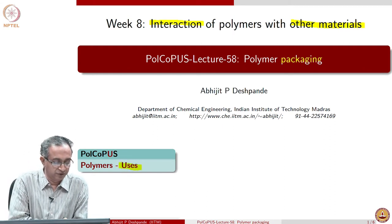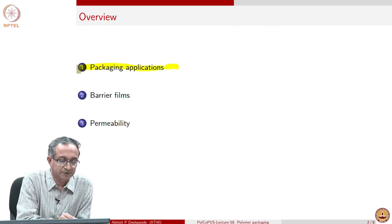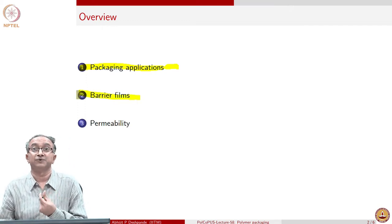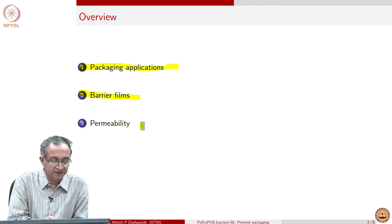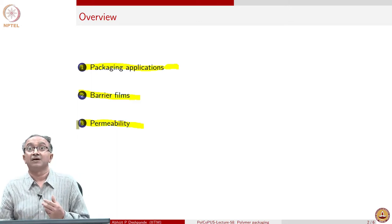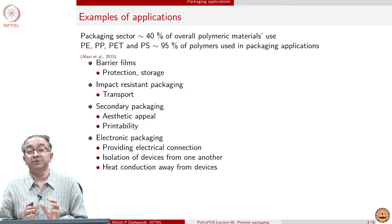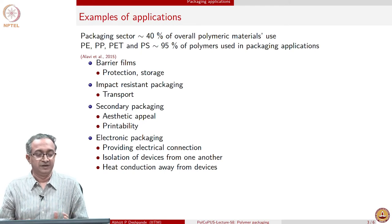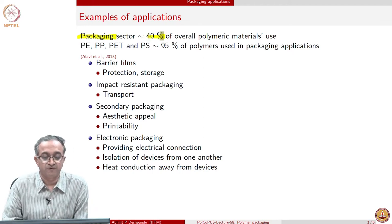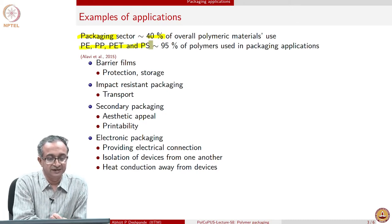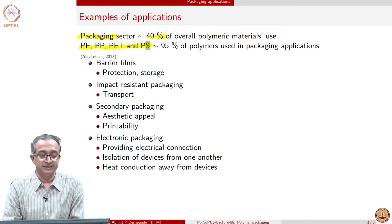We will look at different packaging applications in which polymers are used, especially barrier films which prevent small molecules going back and forth across the polymer packaging. We will also discuss polymer permeability to various species. The packaging sector probably accounts for 40 percent of overall polymeric materials used. If you look at polyethylene, polypropylene, PET, and polystyrene, basically 95 percent are these four polymers, which pretty much dominate packaging applications.